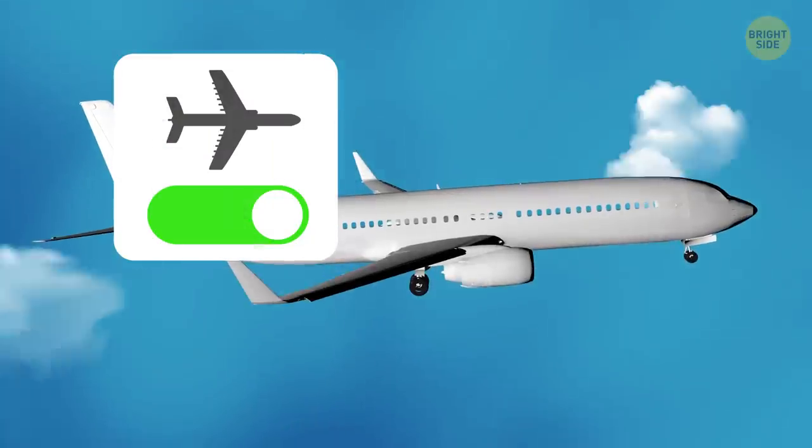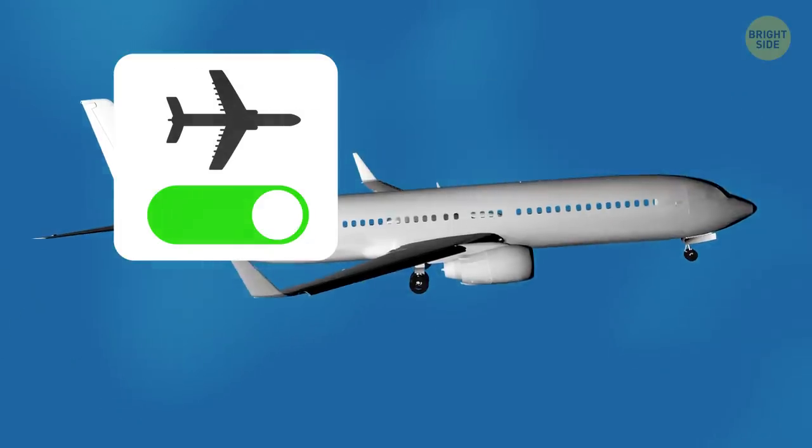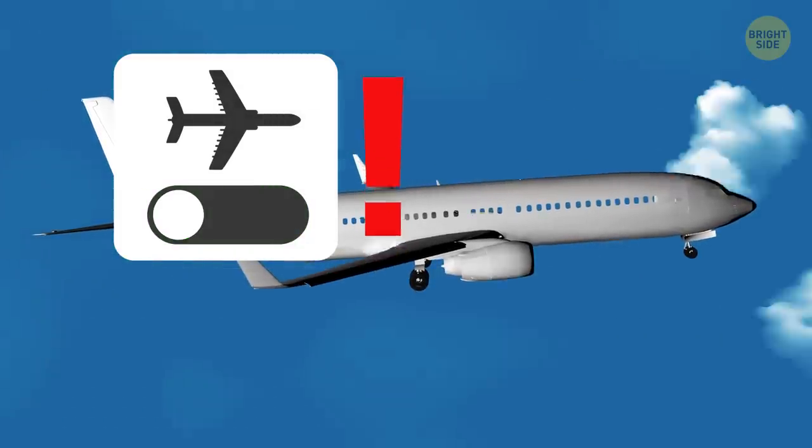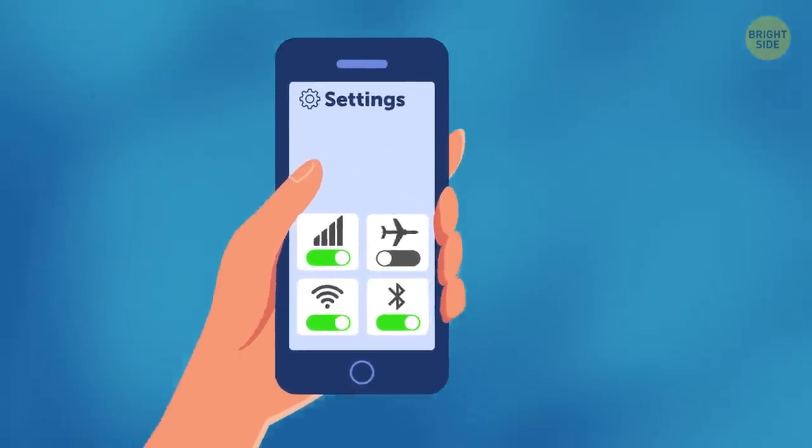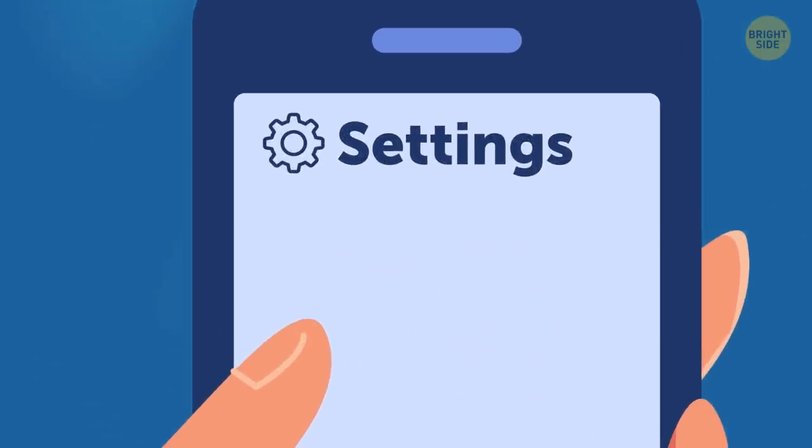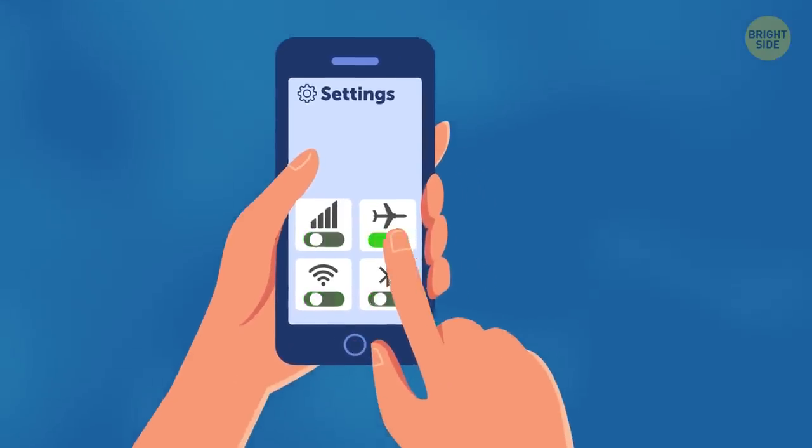However, it doesn't mean that you can, or should, switch off the airplane mode after the plane has climbed to cruising altitude. So first, right before takeoff, you should go to Settings on your smartphone and choose the airplane mode.